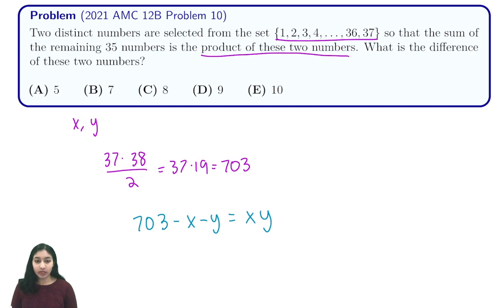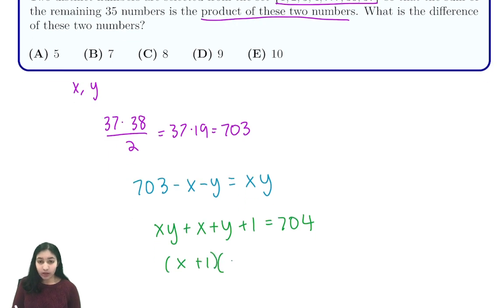From here we're going to use a really helpful trick called Simon's favorite factoring trick, and that just tells us that we can manipulate this expression to get xy plus x plus y plus 1 is equal to 704. And from here we factorize as x plus 1 times y plus 1 equals 704.